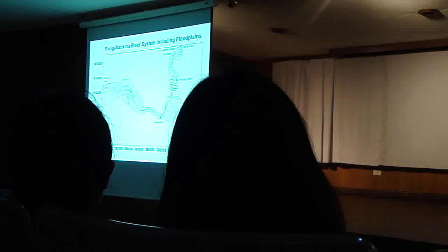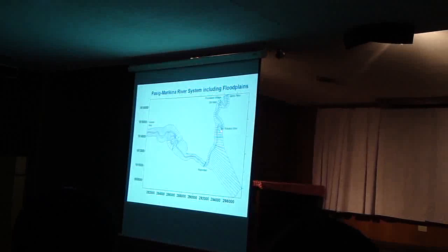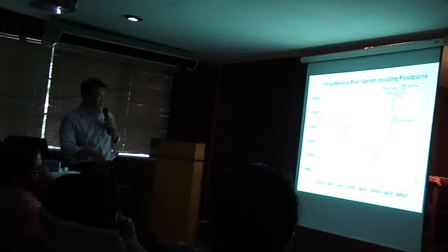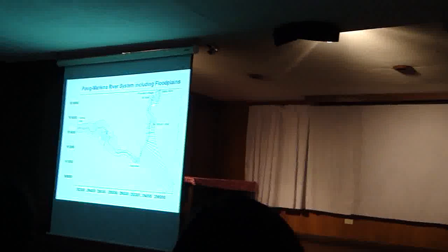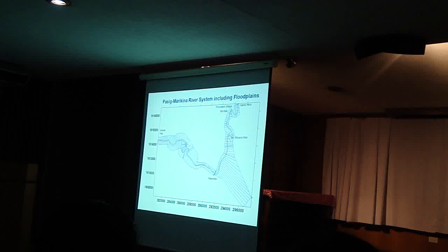The Pasig Marikina River system is represented by what we call a network of one-dimensional channels. There are three main channels here: one goes to Laguna Lake Manggahan floodway, you have Napindan channel here, and then San Juan River here. I just like to point out that that's in Santo Niño Bridge, there's the Provident village here, SM Mall in Marikina, Rosario weir here, and then goes to the Manggahan floodway.